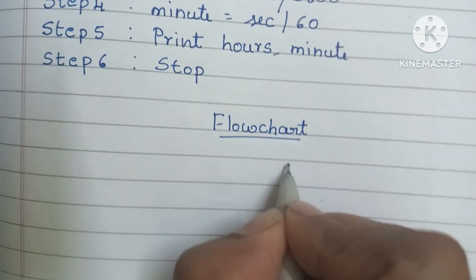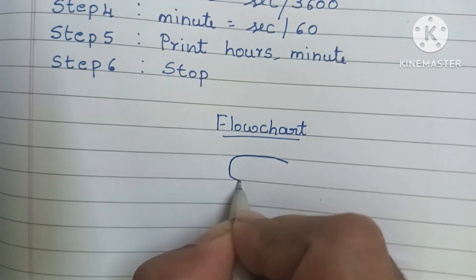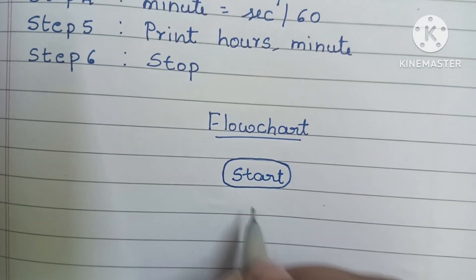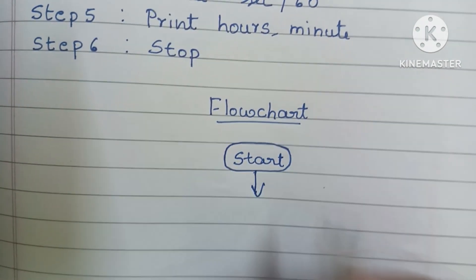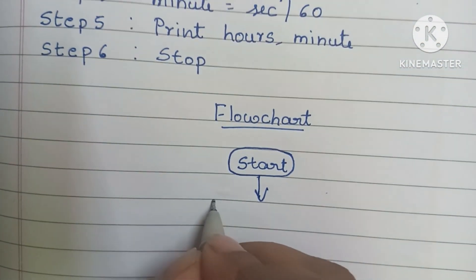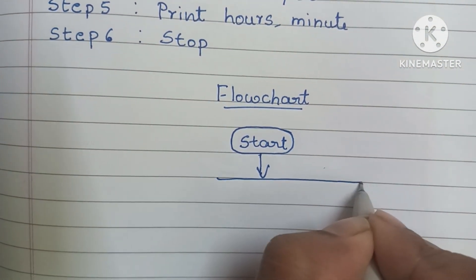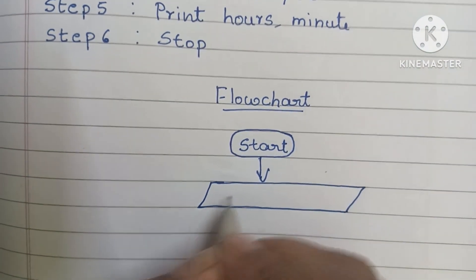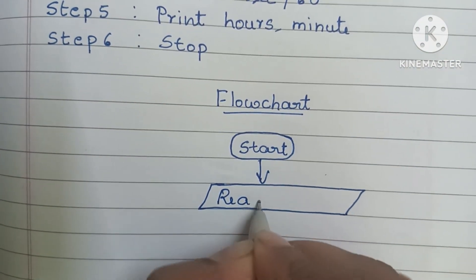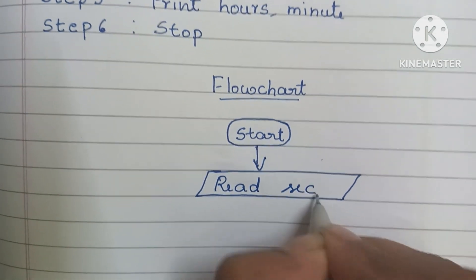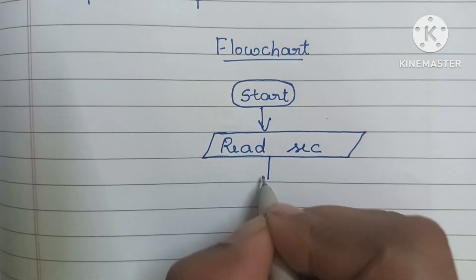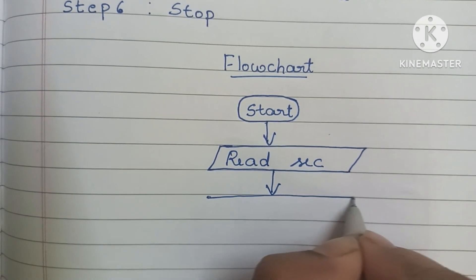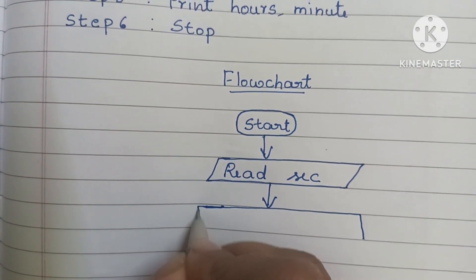The flowchart starts with a start statement written within an oval shape. Next, we have to read the input values. Input values are written within a parallelogram shape, so we draw a parallelogram and within that write: Read Second.